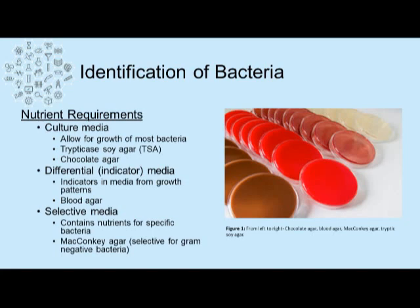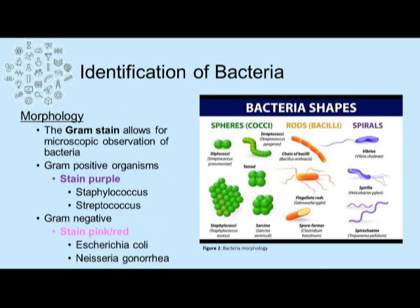Selective media contains nutrients for specific bacteria — for example, MacConkey agar is selective for gram-negative bacteria. To identify the morphology of bacteria, the gram stain can be used to distinguish gram-positive from gram-negative bacteria. Gram-positive bacteria stain purple, such as staphylococcus and streptococcus, while gram-negative bacteria stain pinkish-red, such as Escherichia coli or Neisseria gonorrhoeae. Morphological characteristics, depending on the species, can be diplococci, streptococci, tetrads, or a staph formation. Bacteria can also be rod-shaped, vibrio, or spirochetes.